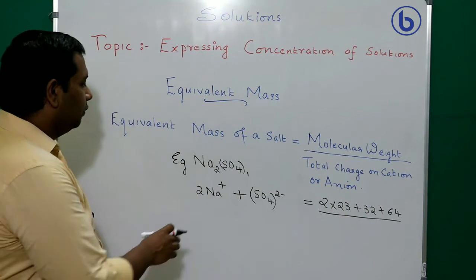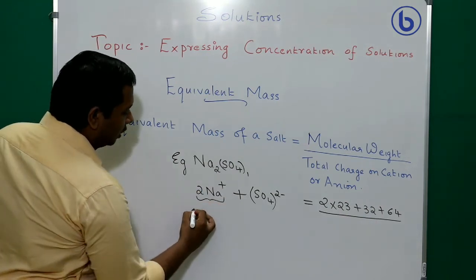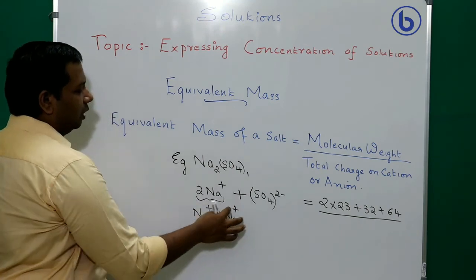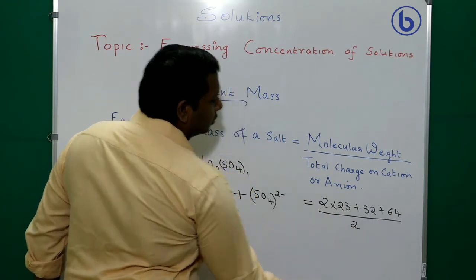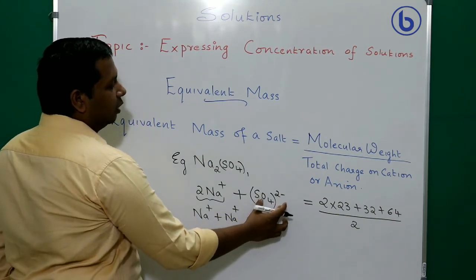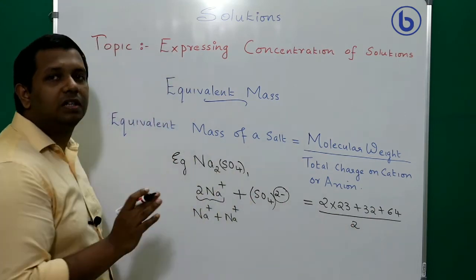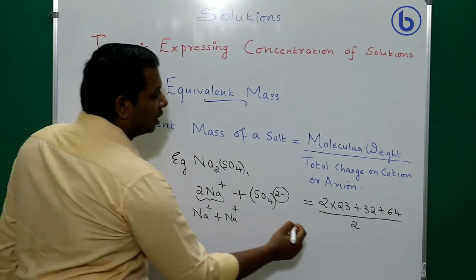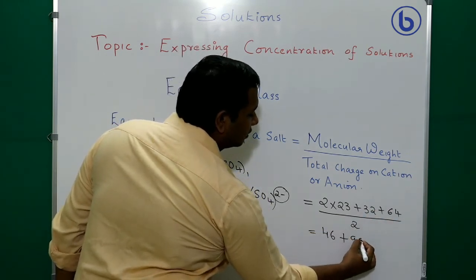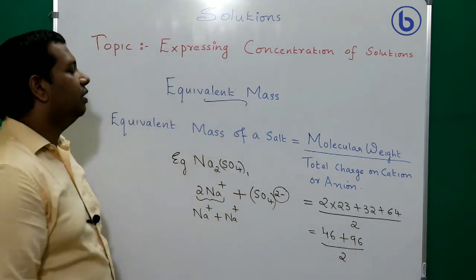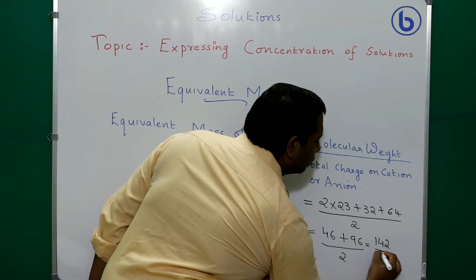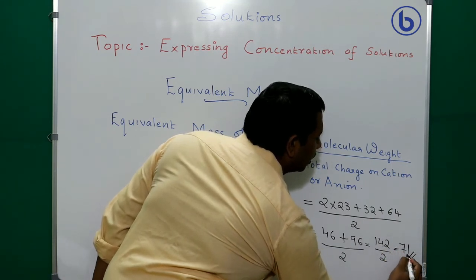To find the total charge: cation side — 2 Na⁺ gives total charge of +1 + 1 = 2; anion side — one SO₄²⁻ gives total charge of 2. Either way, the denominator is 2. Equivalent mass = 142 ÷ 2 = 71.